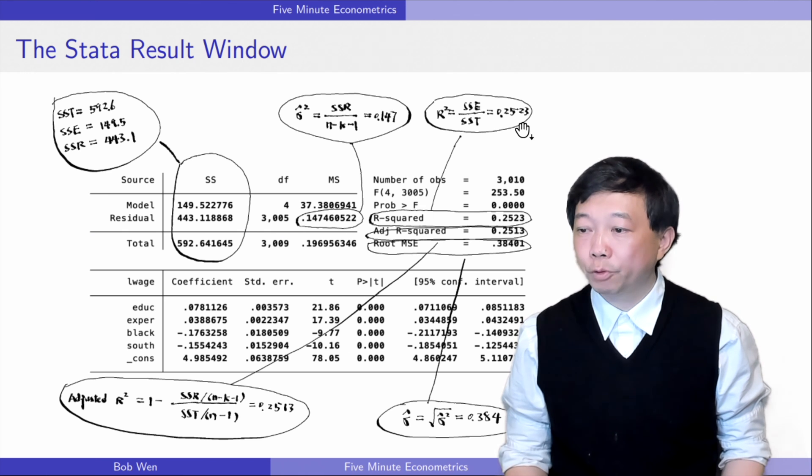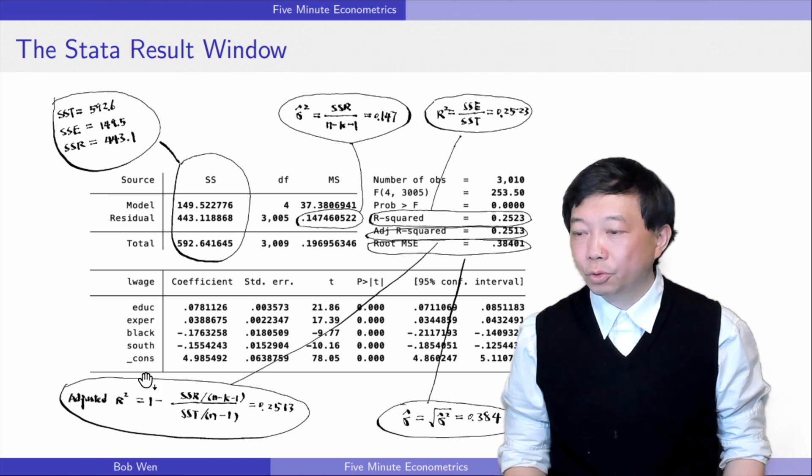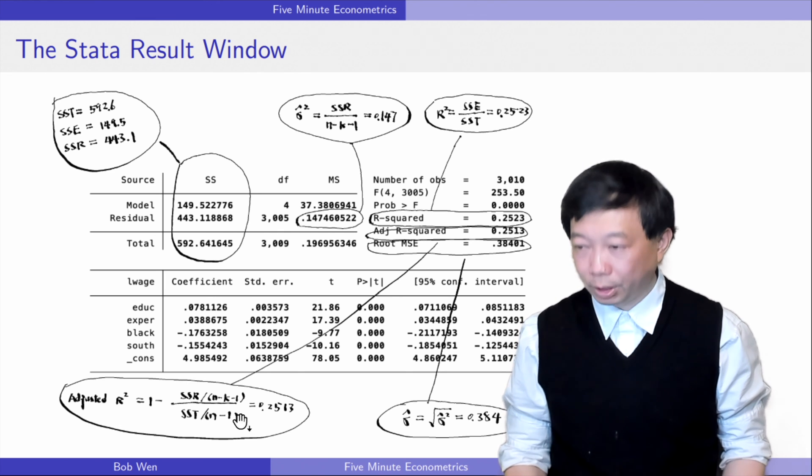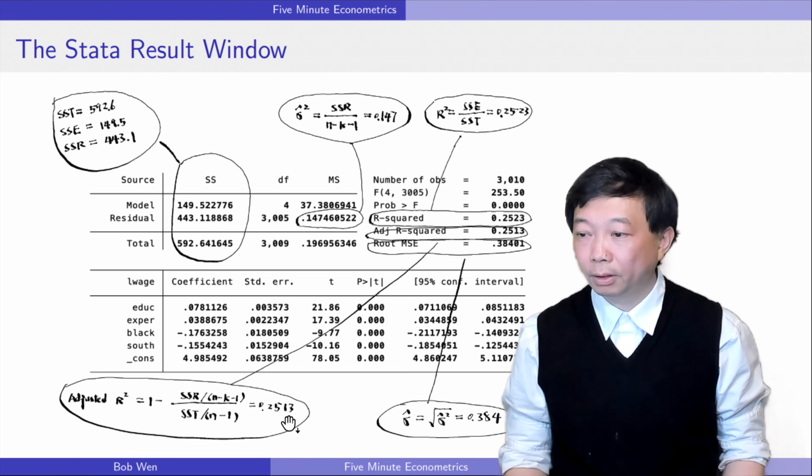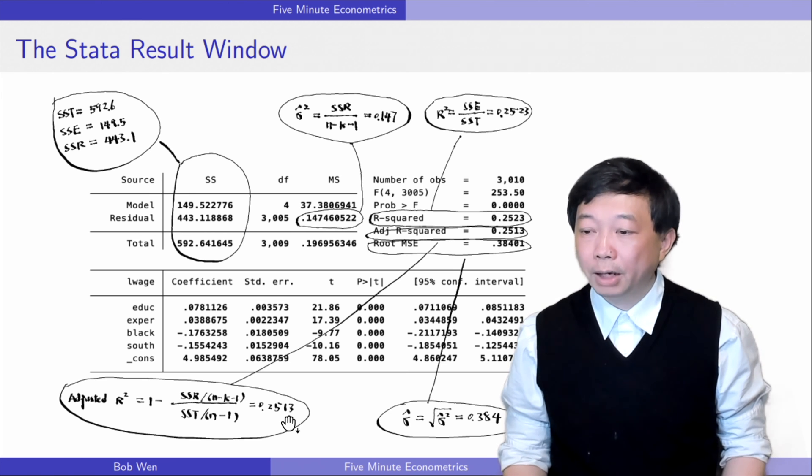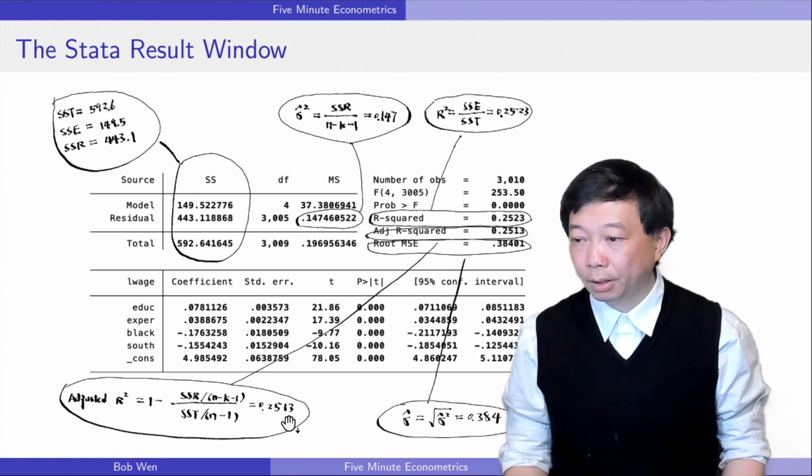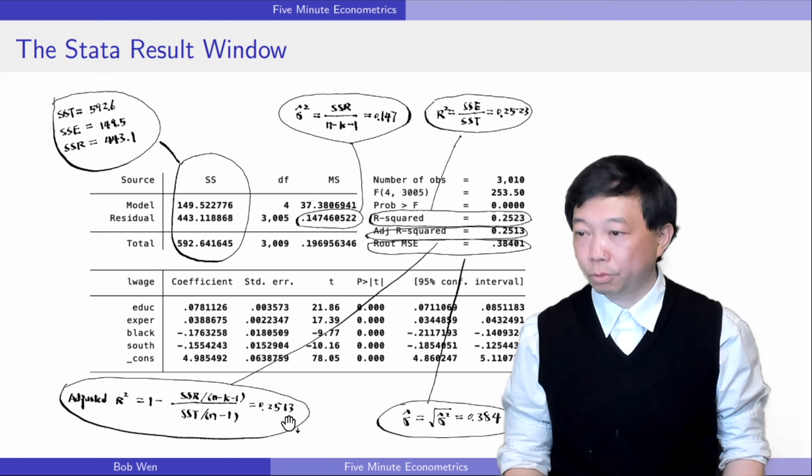It is 0.2523 in our example. The adjusted R squared is the R squared adjusted by the degrees of freedom. It is smaller than the R squared and can be seen as imposing a penalty for adding more explanatory variables into the model. It is 0.2513.